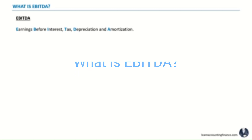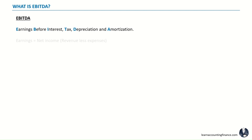EBITDA stands for earnings before interest, tax, depreciation, and amortization. Earnings are net income, which means revenue less expenses.